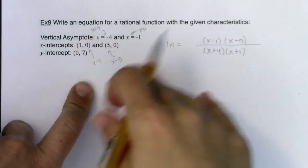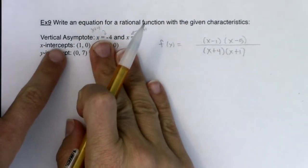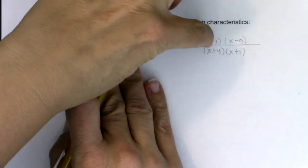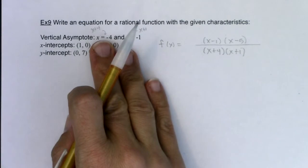Now, I didn't do this here, but let's say it had said instead of x-intercept, it had said hole at 1, 0. So let's just say it said hole. I'd have an x minus 1 in the numerator and in the denominator.